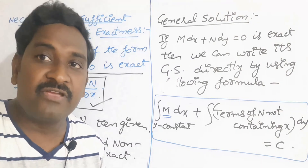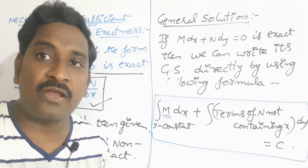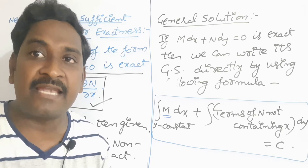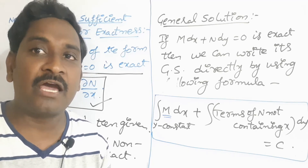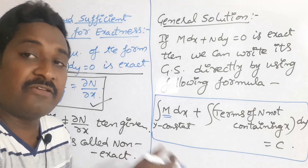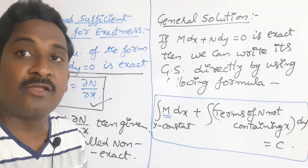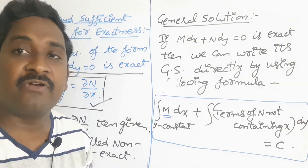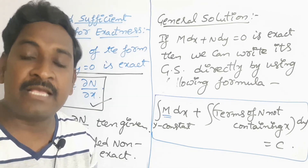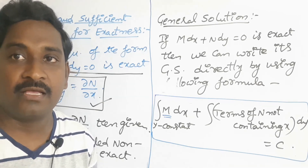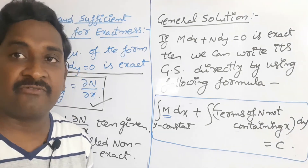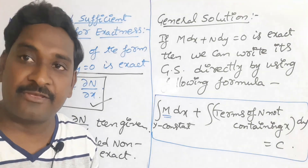It is clear that if the given equation is non-exact, we cannot write the general solution directly. Only if the given equation is exact can we apply this formula. If the given equation is non-exact, we have to reduce it to an exact equation by using integrating factors. In the next video, I will give some examples on exact equations. Thank you very much.